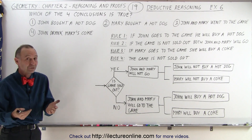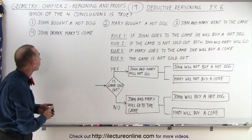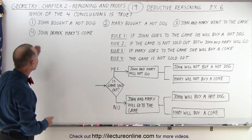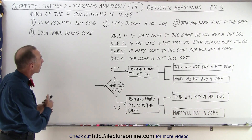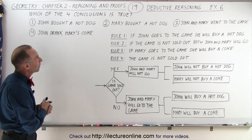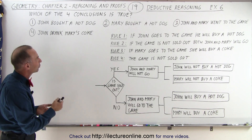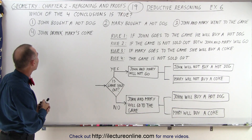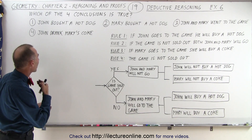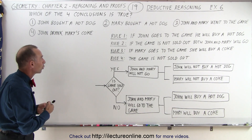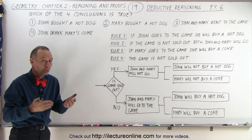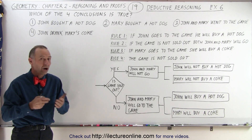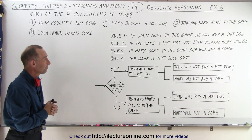We were given these four conclusions: John bought a hot dog, Mary bought a hot dog, John and Mary went to the game, and John drank Mary's Coke. So which of those four statements are correct?